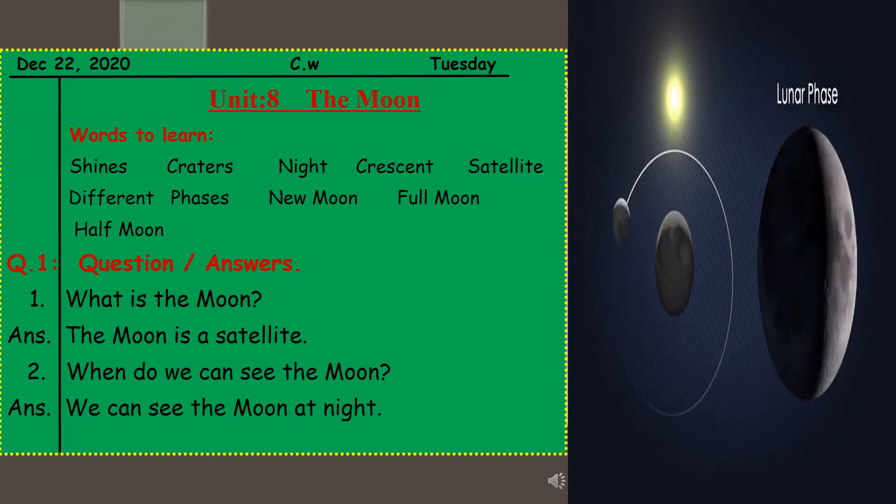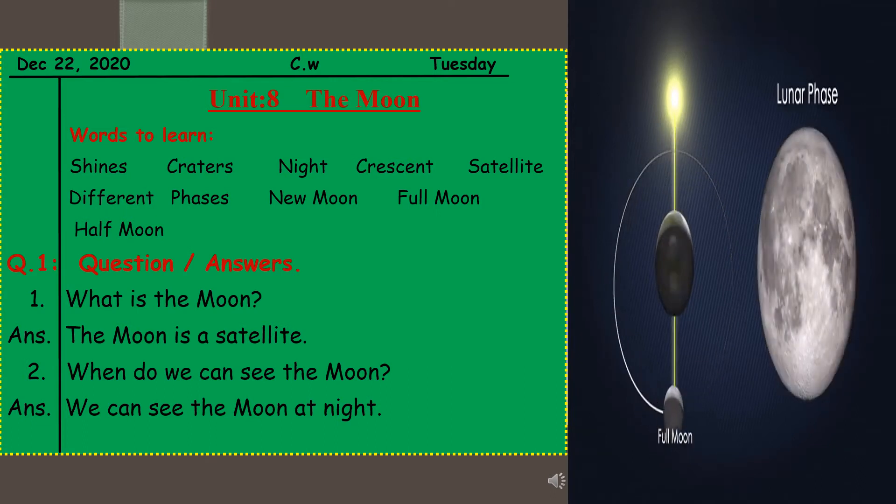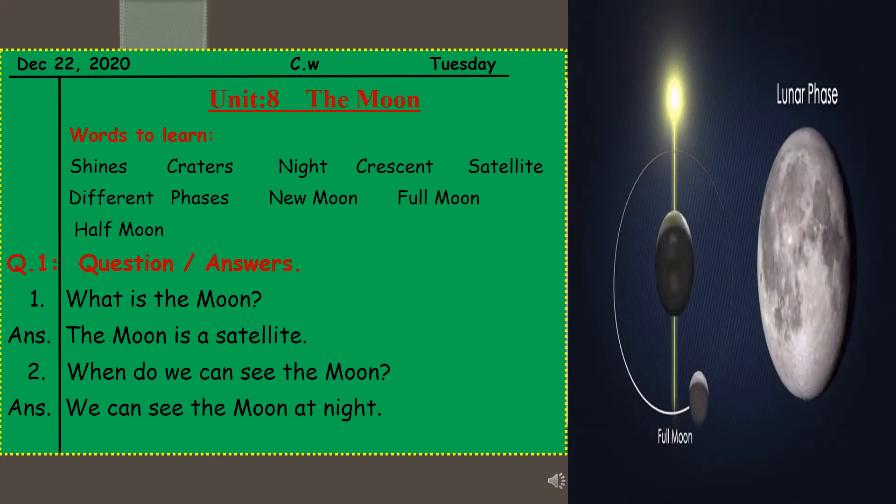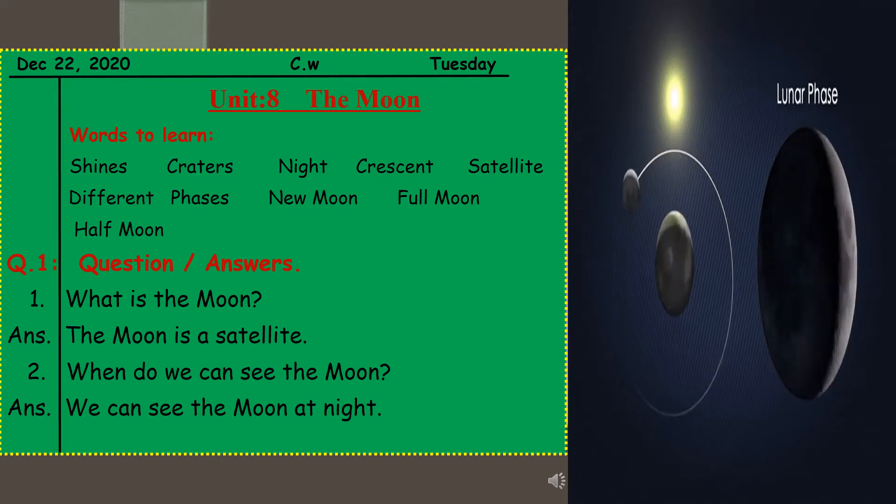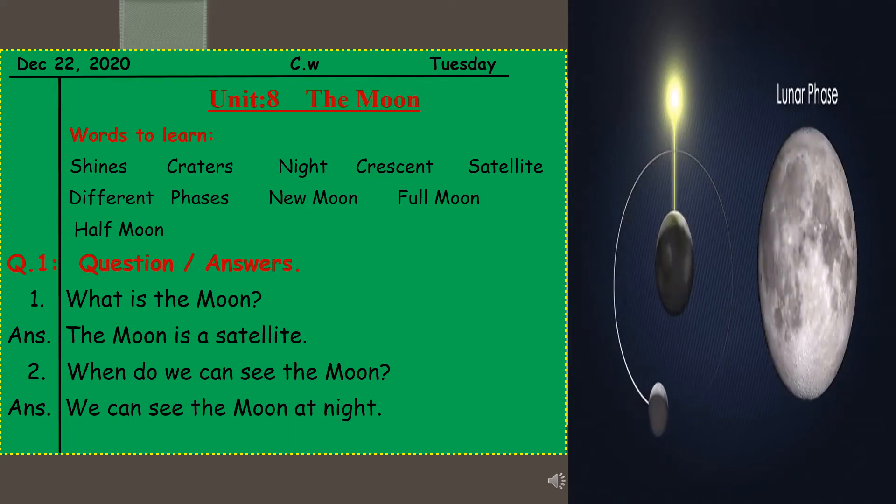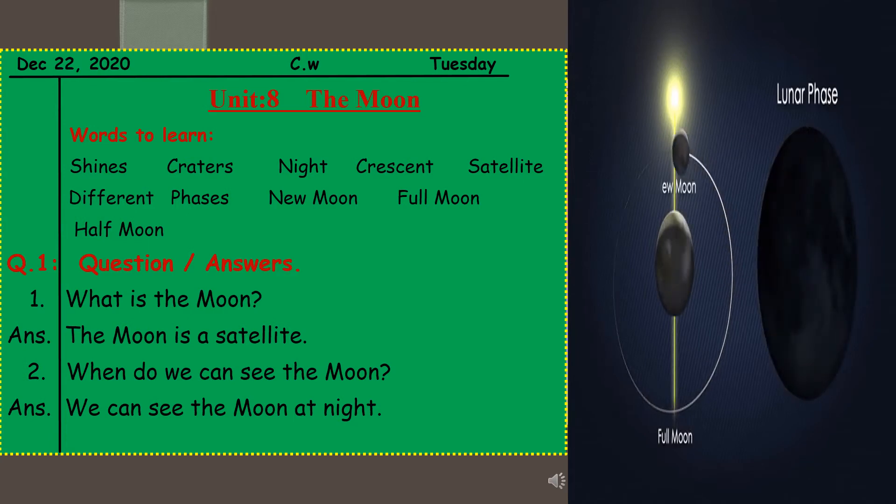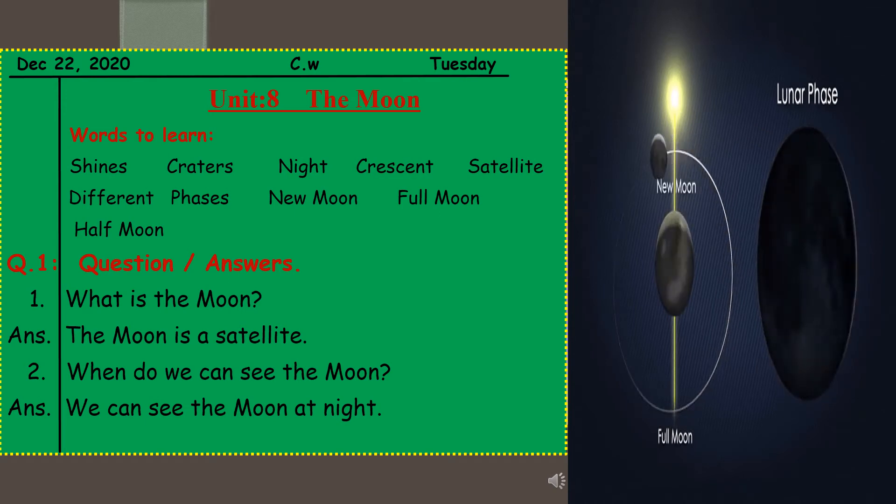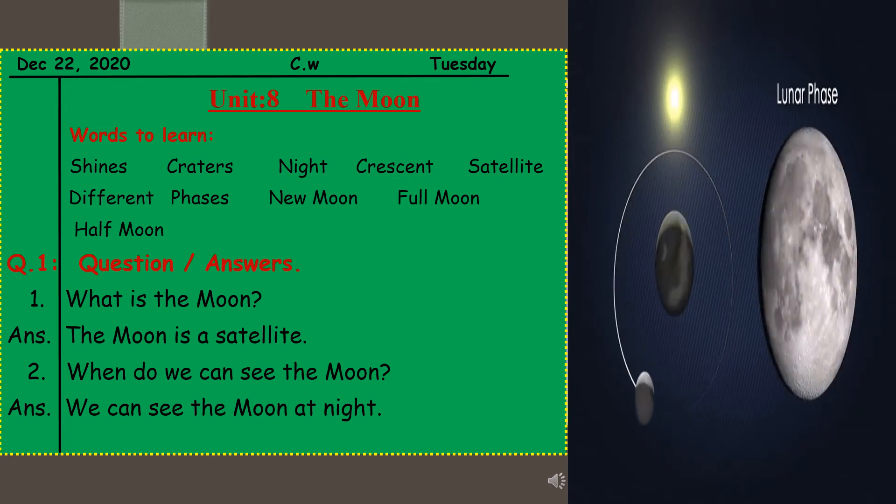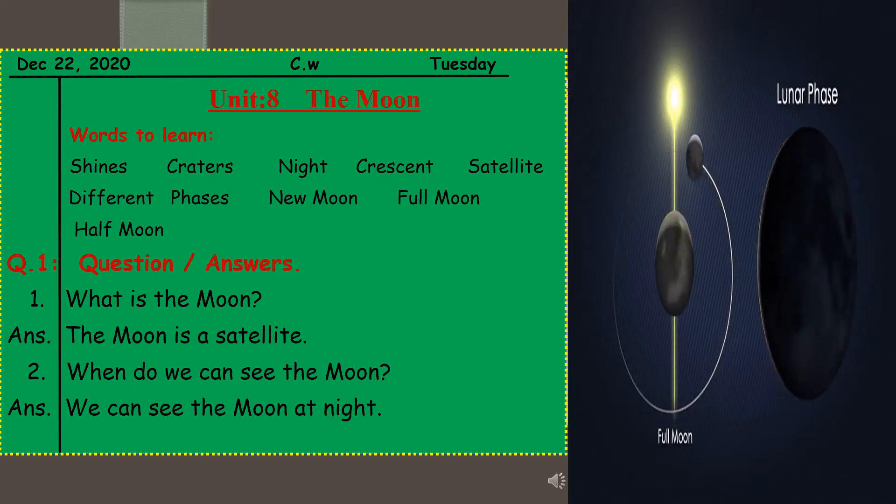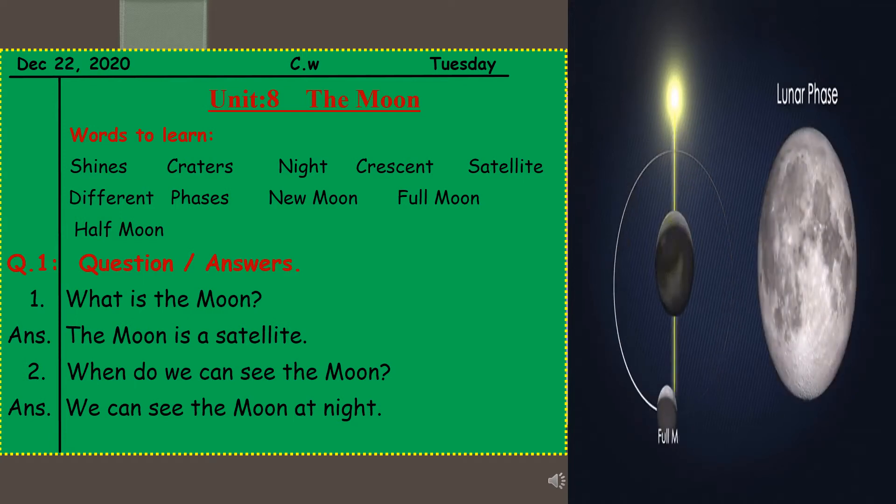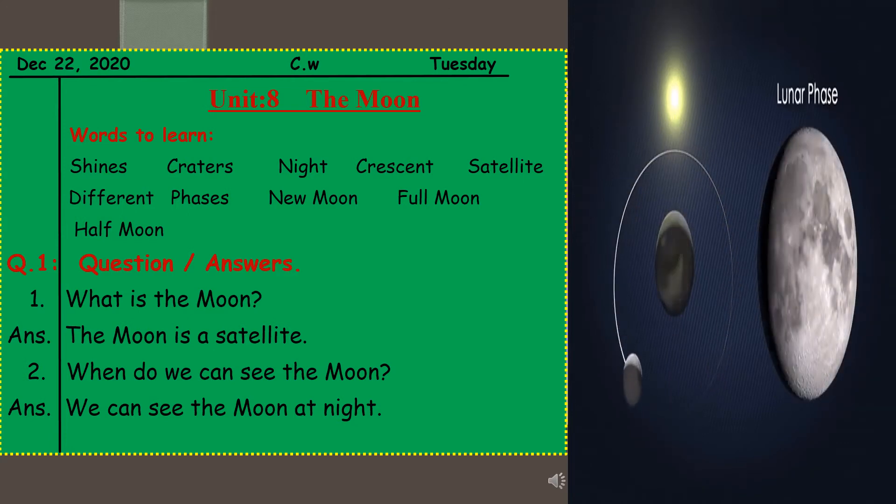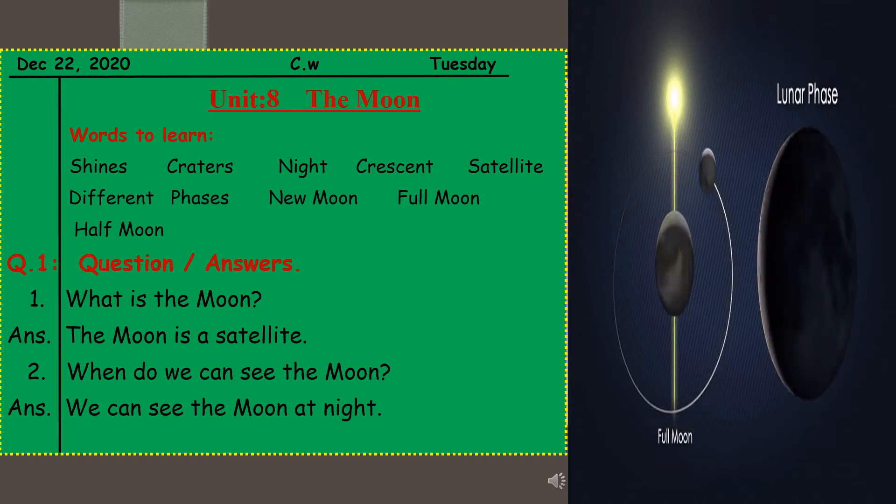Next word is craters. Craters, you have heard this word many times during the explanation. Craters are big holes on the surface of the moon. Craters, C-R-A-T-E-R-S, craters. Next word is night. As we can see the moon during the night, you know. So night, N-I-G-H-T, night.